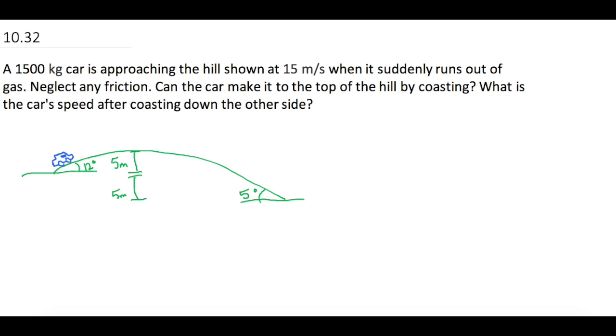Alright, so let's just think about this for a second. How do we know if the car is going to be able to make it to the top of the hill? So we need to know, the car has to go, how much energy does it need to get to the top? So that is going to be its gravitational potential energy, which is going to be mgy. And we have everything for that.